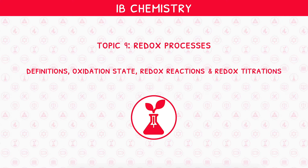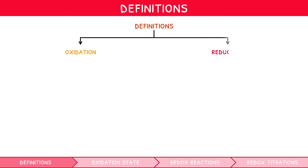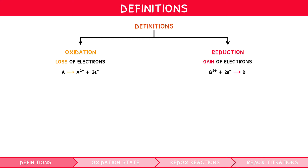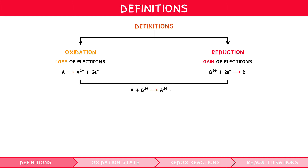Before diving into this topic, we must first outline the two most important definitions used to describe species in reactions: oxidation and reduction. Oxidation is the process by which a species undergoes a loss of electrons. Reduction is the process by which a species undergoes a gain of electrons. A mnemonic that can be used to remember these definitions is OIL RIG — Oxidation Is Loss, Reduction Is Gain of electrons.